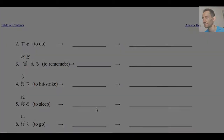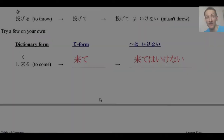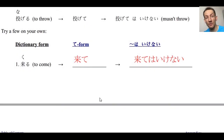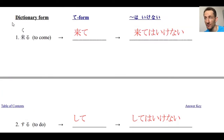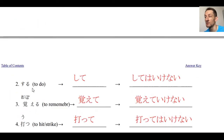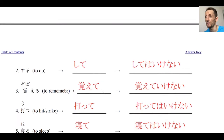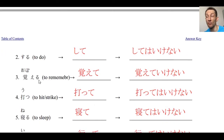Let's check the answers. Number one: kuru — we get kite, kite wa ikenai, must not come. Number two: suru — our type 3 verb — becomes shite, shite wa ikenai. Number three: type 2 verb oboeru becomes oboete, oboete wa ikenai.